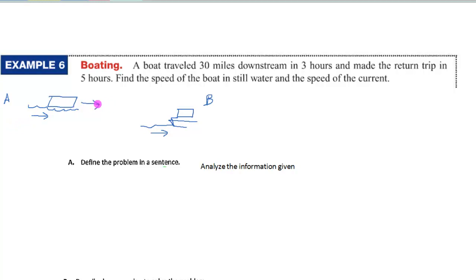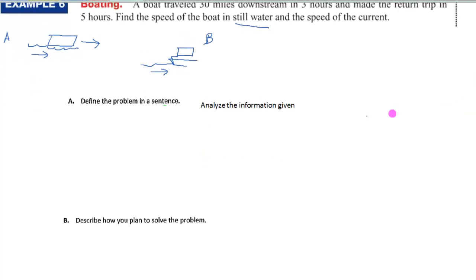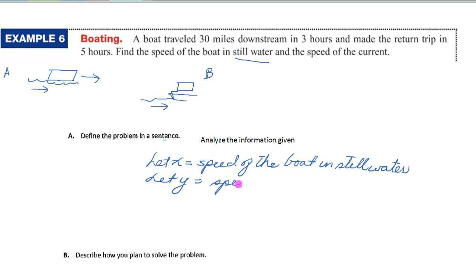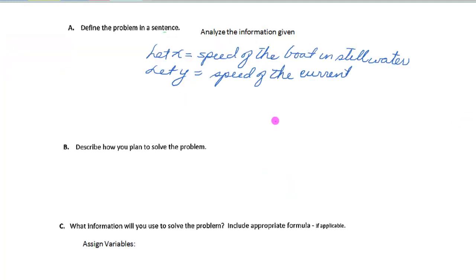We want to find the speed of the boat if there were no current — that's called boat in still water — and the speed of the current. We'll use a system of equations with two variables: let X be the speed of the boat in still water, and let Y be the speed of the current. A table will help us organize the information.